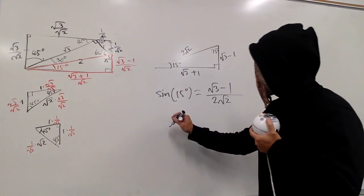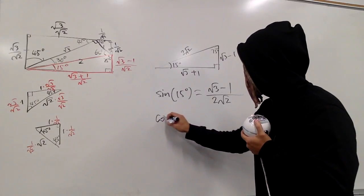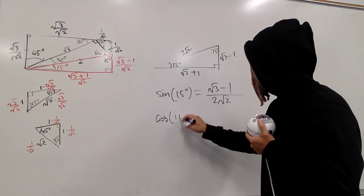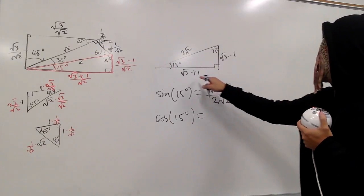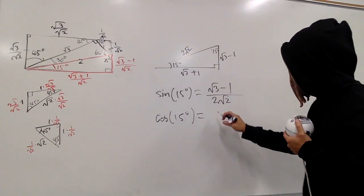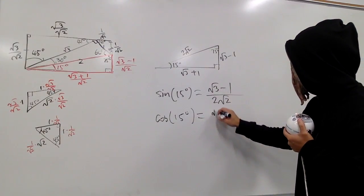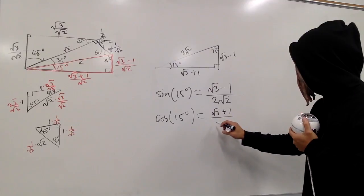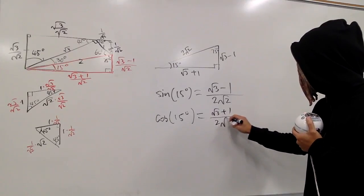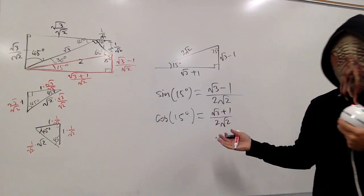And if you would like, you can also do cosine. Cosine of 15 degrees is this over that — the plus version: square root of 3 plus 1 over 2 square root of 2.